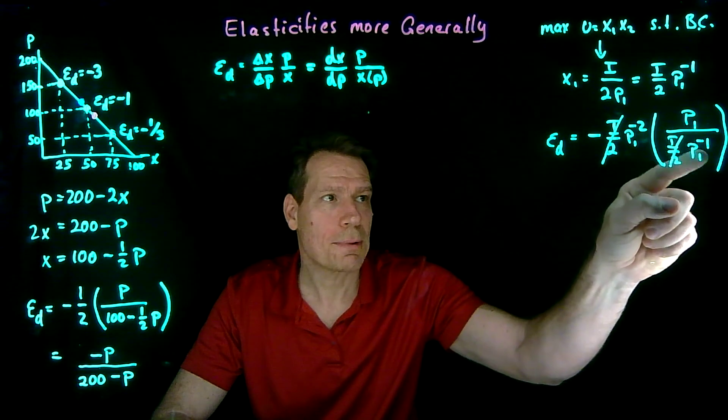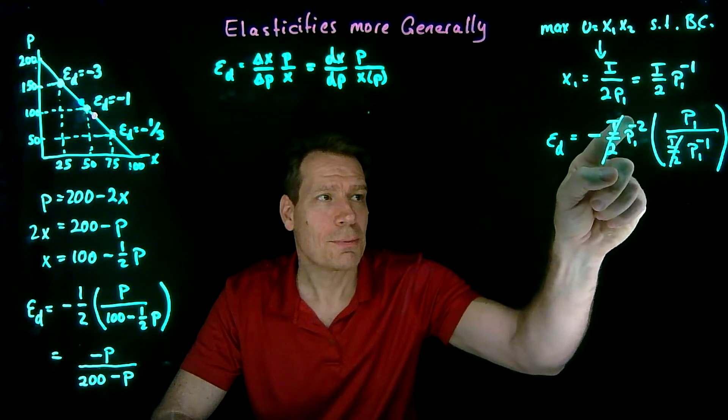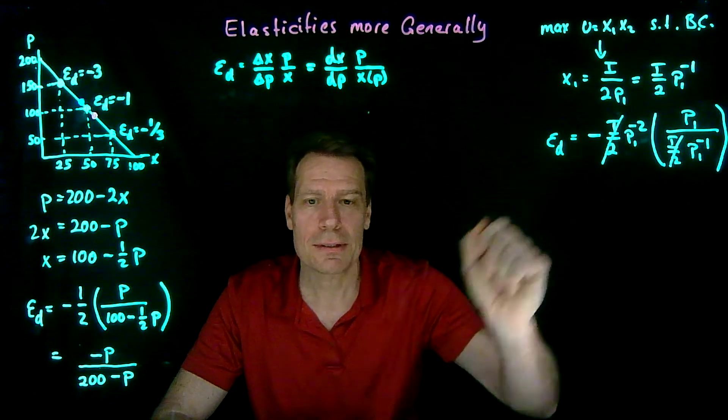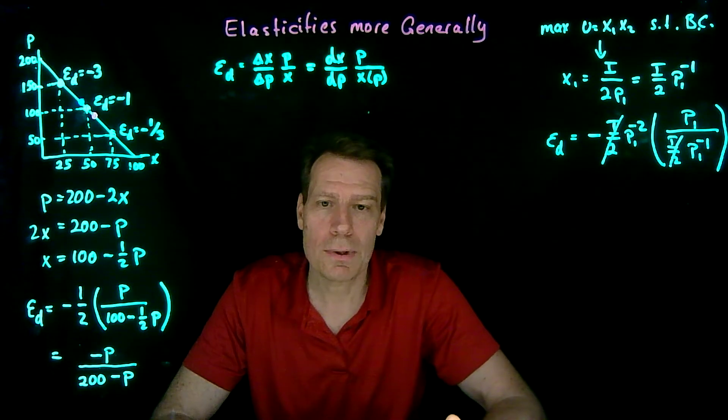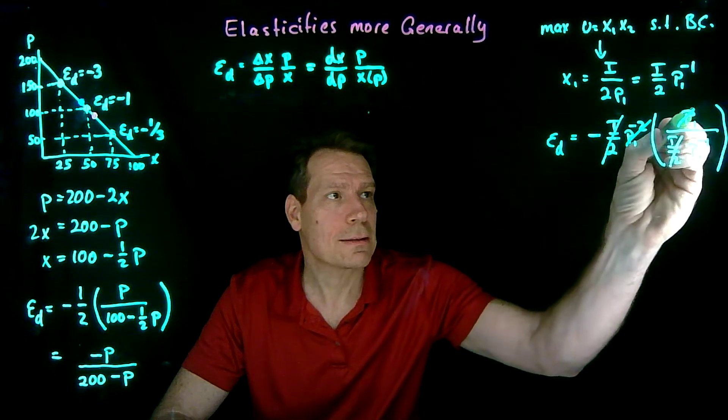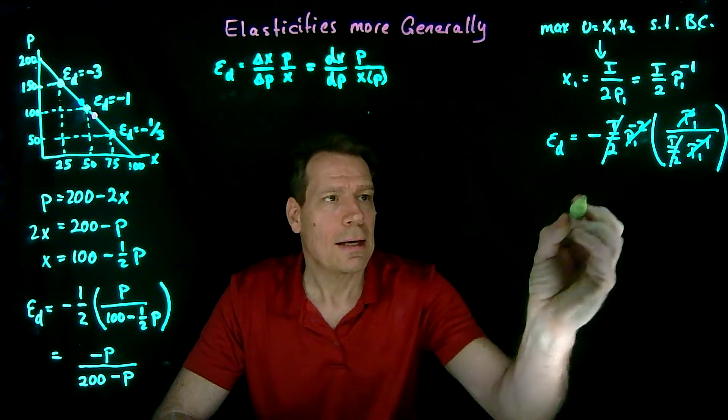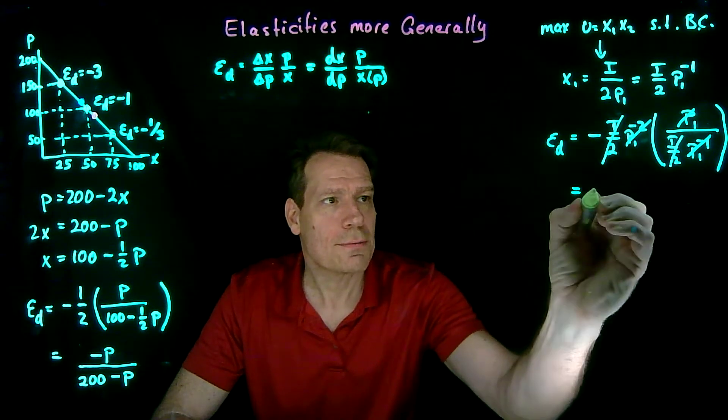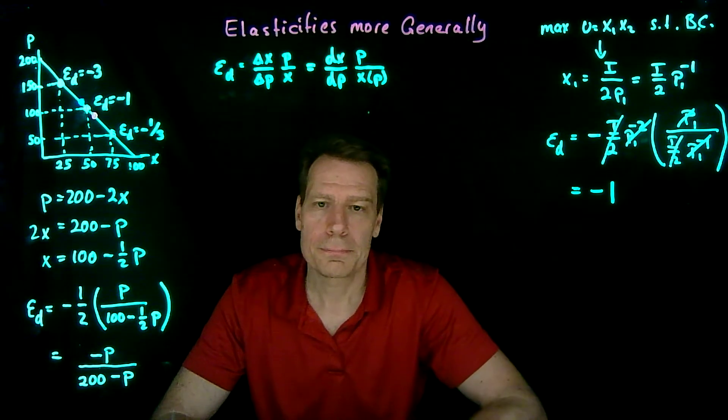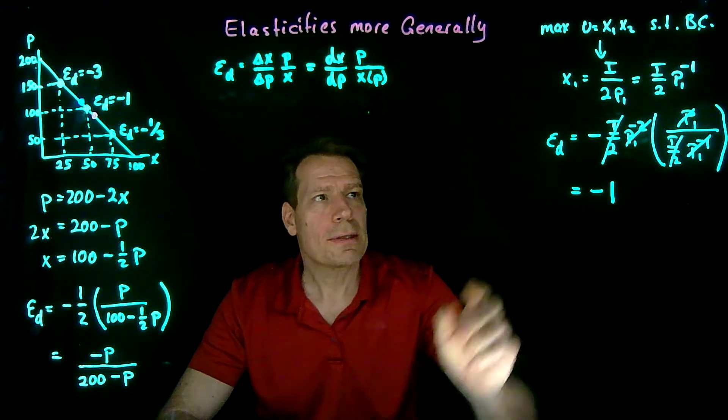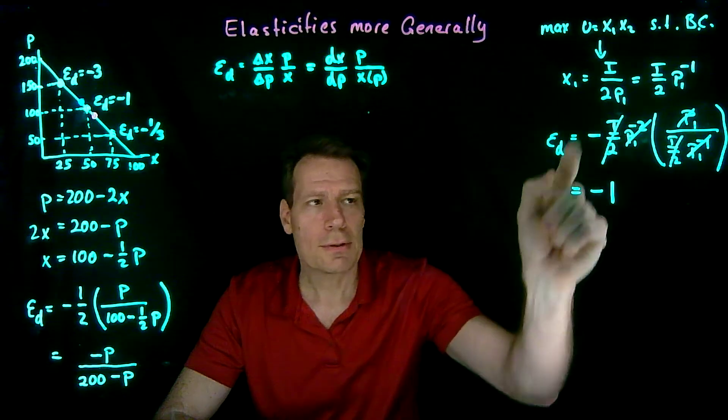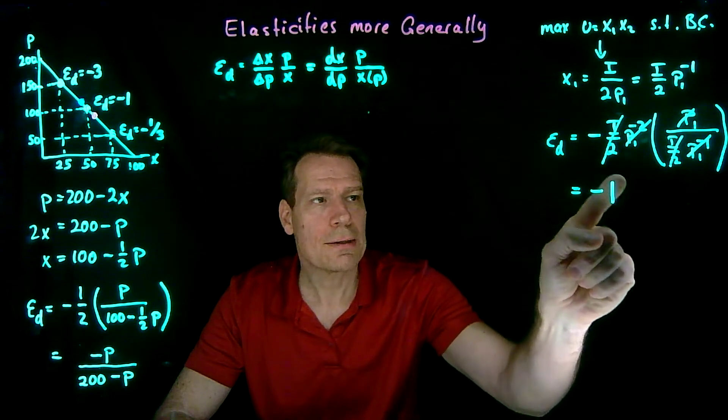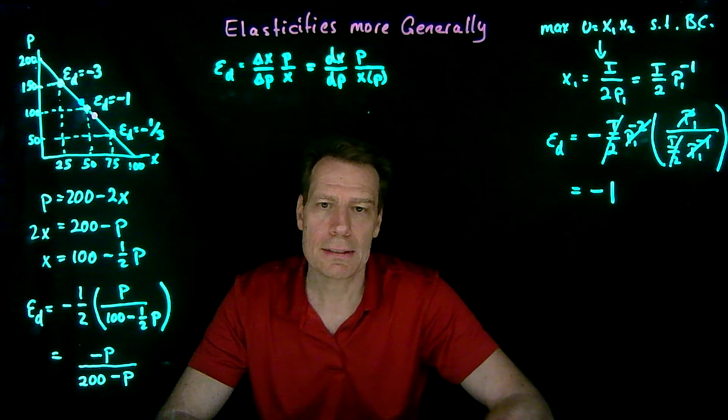So minus 1 plus 1 gives us 0. So all we're left with is p1 to the 0. All the prices cancel. And we end up with just a negative 1. So that tells me that for this demand function, the price elasticity is equal to minus 1 everywhere, regardless of what the price is.